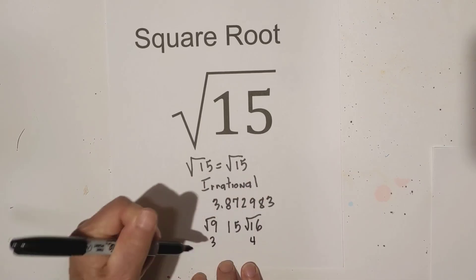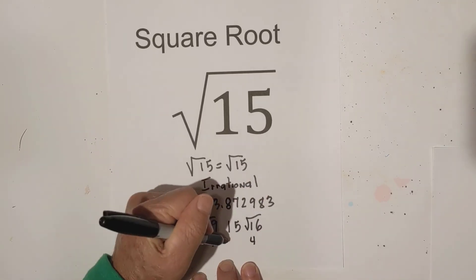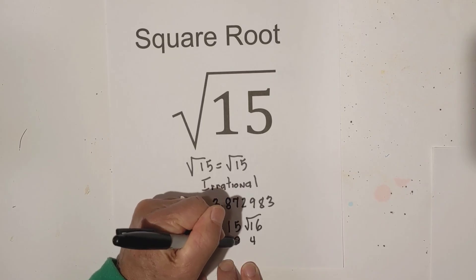square root of 16 is 4, so you know that 15 is close to 16, so you can just take a guess, 3.8.